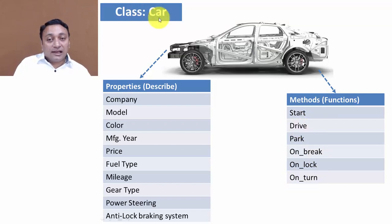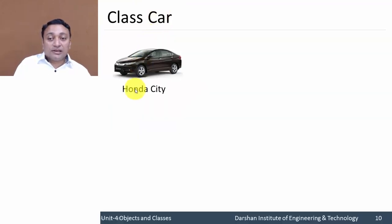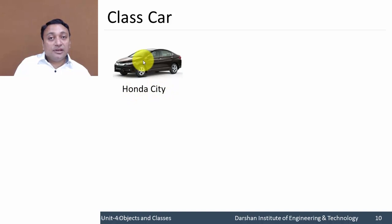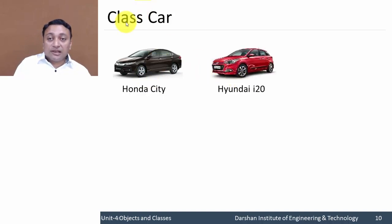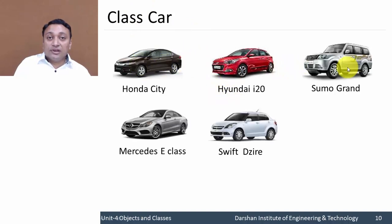So if we have class 'car', we can create an object from it — for example, car Honda City — which will have company name Honda and various attributes like manufacturing year, gear, and fuel type. If we make another object from the same class 'car', it will have different attribute values.